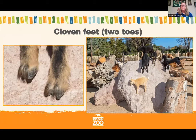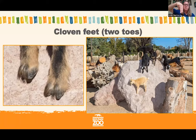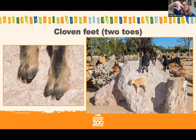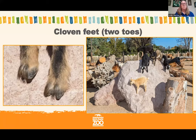Cloven feet are another good type of foot for grasping. We saw the Spekes gazelle feet at the beginning with running — two hoofed toes close together. Cloven feet means split toes. The goat's toes are kind of split apart, which allows them to really grab onto things like rocks. You can see the goats at the zoo showing off their rock-climbing skills, and their relatives mountain goats are also excellent rock climbers.